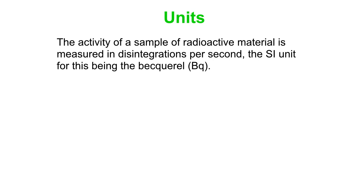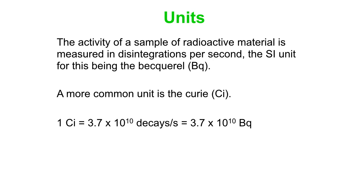So activity, as we talked about, is number of decays per unit time. And the SI unit for that is known as the Becquerel. More commonly, we might use the Curie instead. And it turns out that one Curie is 3.7 times 10 to the 10 decays per second, that's 3.7 times 10 to the 10th Becquerel.